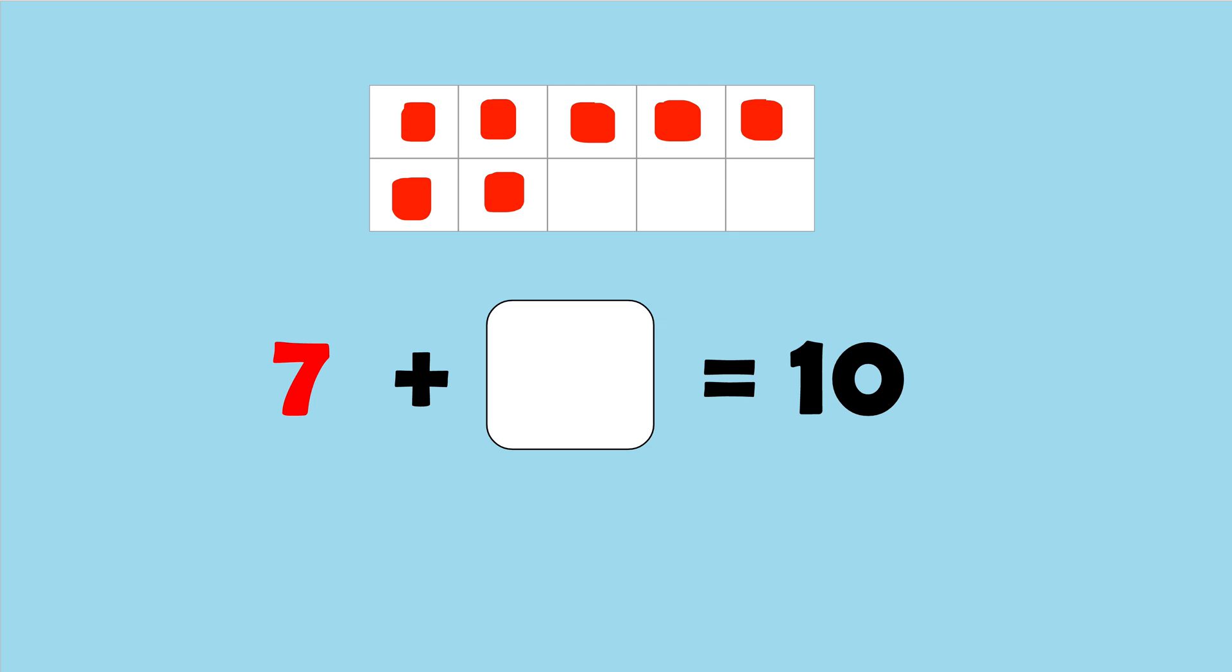Okay. I hope that was good enough time for you to solve this. I have a few more empty boxes, and I hope you were able to figure out that you are only missing 3 more to make 10. Seven plus 3 equals 10.